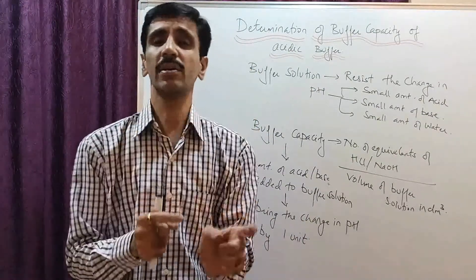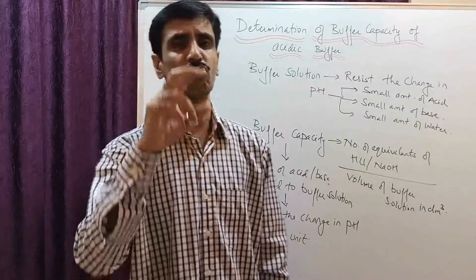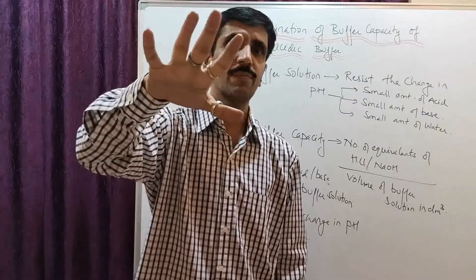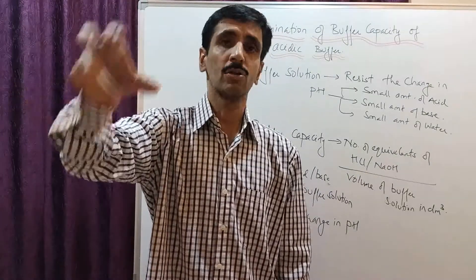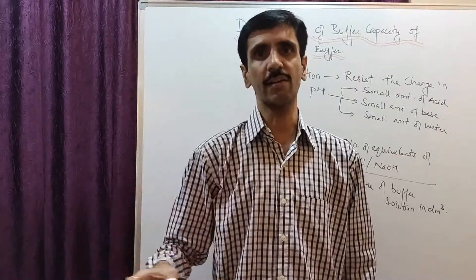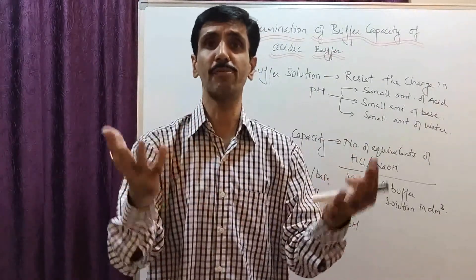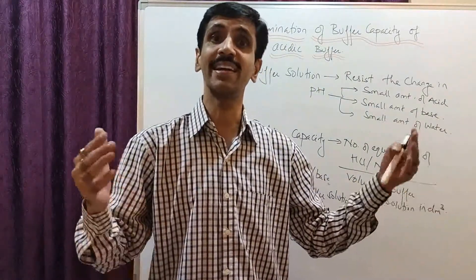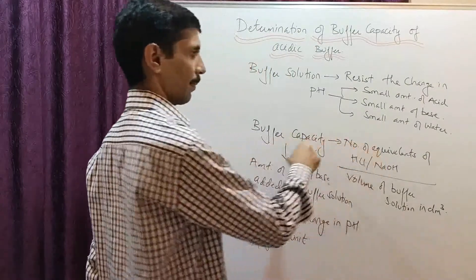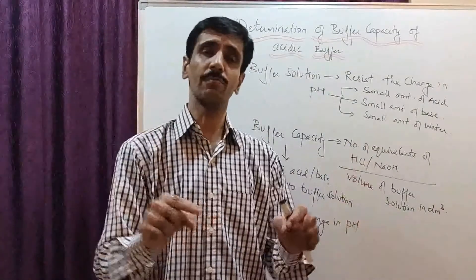Similarly, if I add NaOH to a buffer solution with pH 4, I add it until the pH becomes 5, because addition of base increases pH. The volume of NaOH required to bring about the change in pH by one unit is noted. Greater the volume of NaOH or HCl required to bring the change by one unit, greater is the buffer capacity — they are directly proportional.